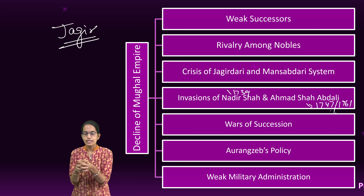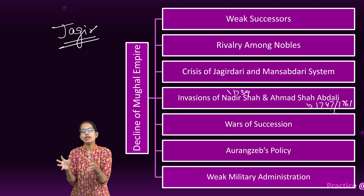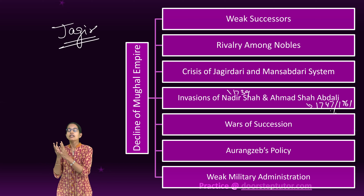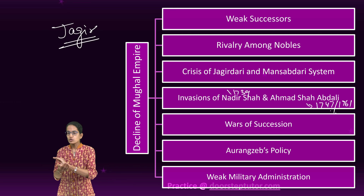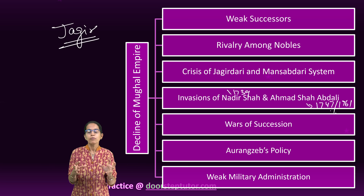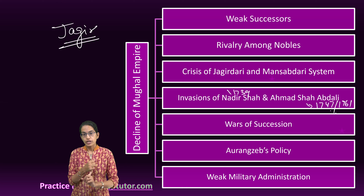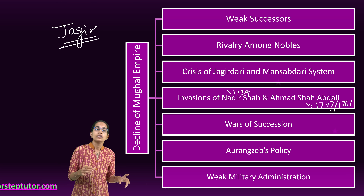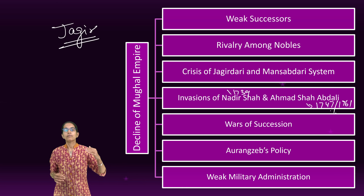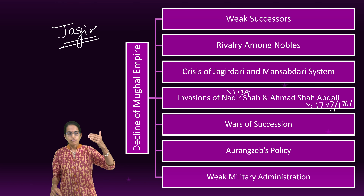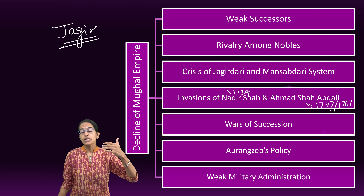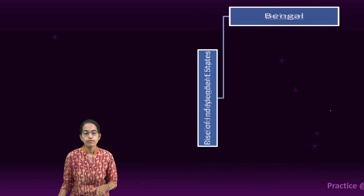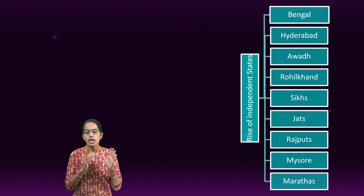They were always fighting among themselves, maintaining relations only on the basis of friendship and conciliation, with no administrative know-how. The foreign invasions and looting of India were again important factors, as were the faulty policies of Aurangzeb, and finally the Jagirdari and Mansabdari systems, which were extremely important and led to a major crisis.